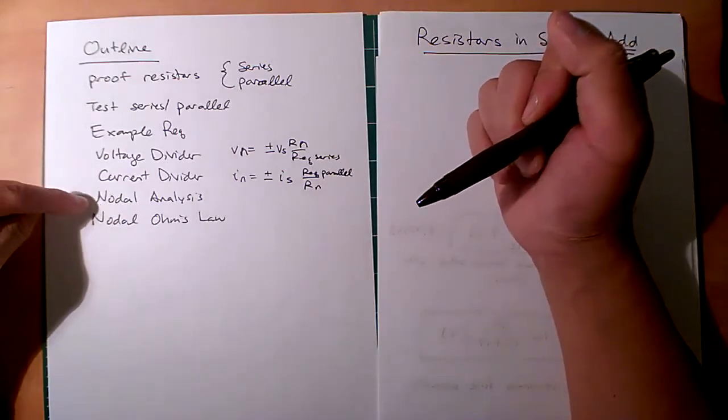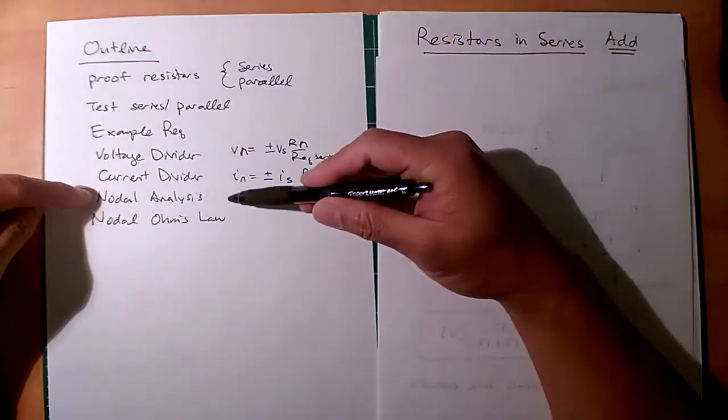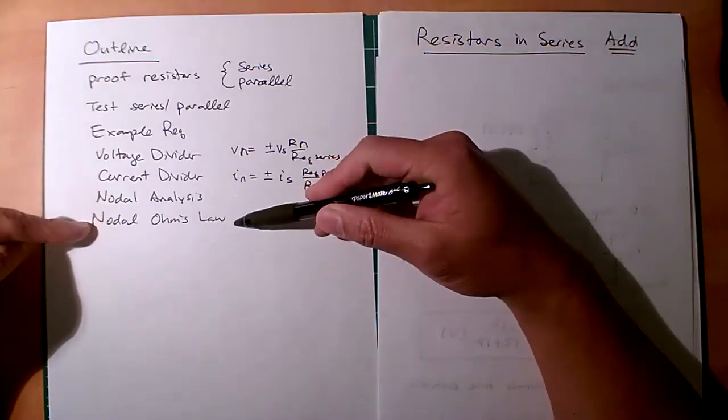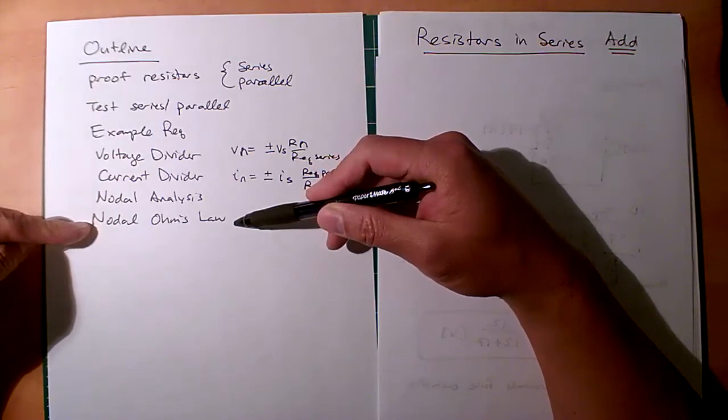Then last, we'll look at nodal analysis and a new form of Ohm's law called nodal Ohm's law, which uses node voltages.